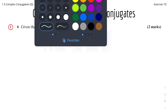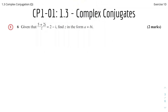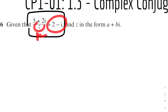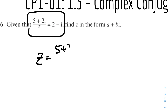Question 2: given that (5 + 2i) / Z = 2 - i, find Z in the form a + bi. So it's basically just rearranging this equation to solve for Z. We swap the two positions — we divide both sides by 2 - i and multiply both sides by Z. Therefore Z equals (5 + 2i) / (2 - i).